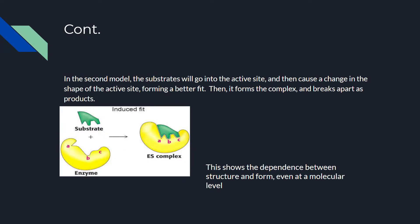The second model is the induced fit. In this model, the substrates go into the active site and cause a change in the shape of the active site. As you can see, the substrate and enzyme in the picture don't actually match together, but when they bind, the active site conforms to the substrate, then breaks off and forms the product. This shows the dependence between structure and function even at a molecular level.